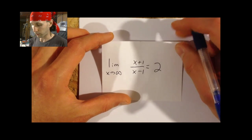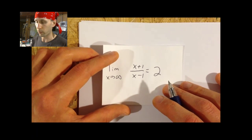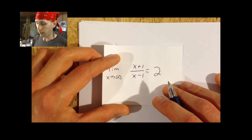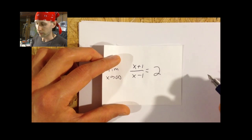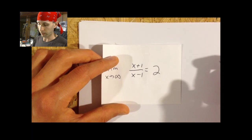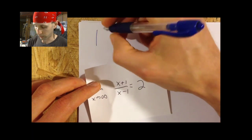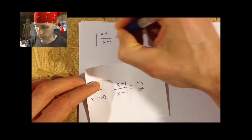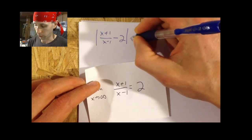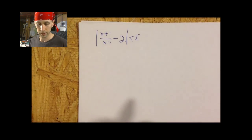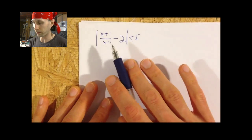The first thing I want to do is, in order to attempt to show that it is two, I would have to find a value — an x value N — past which the difference between this and two can be made arbitrarily small. So I would say, let epsilon be given, and I would have to find an N such that the absolute value of (x+1)/(x-1) minus two can be made arbitrarily small.